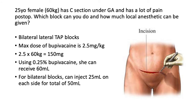If you're doing bilateral TAP blocks — two injections total — you can inject 25 milliliters on each side for a total of 50 milliliters. 25 milliliters on each side should be sufficient for a nice spread of local anesthetic in her TAP planes, and you're also well under the toxic dose.